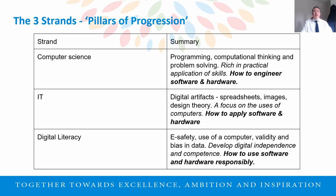Looking at those three strands or pillars of progression in more detail: you've got computer science, IT, and digital literacy. Using the car analogy again — computer science is about how to engineer software and hardware; IT is about how to apply software and hardware; and digital literacy is around making the right selection of software and hardware to use, but equally about its responsible use as well.